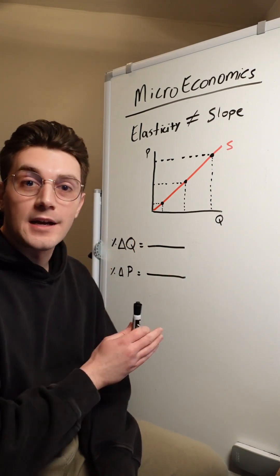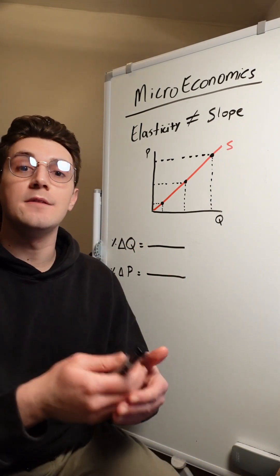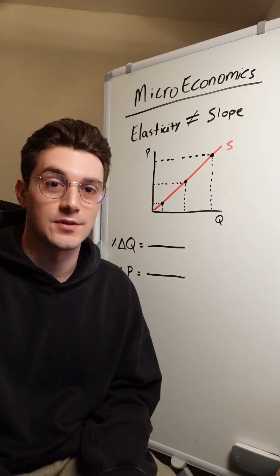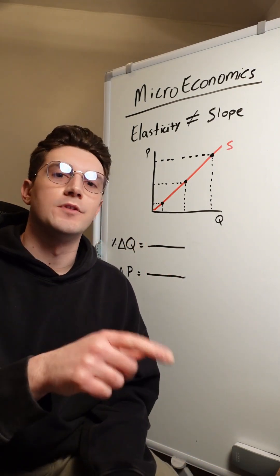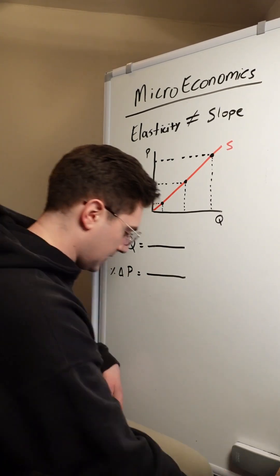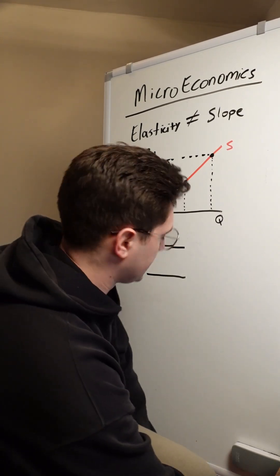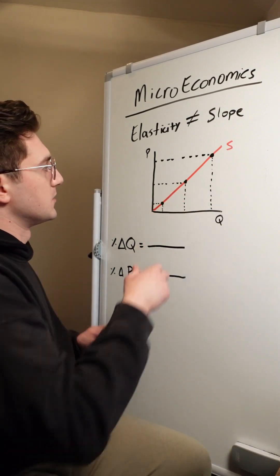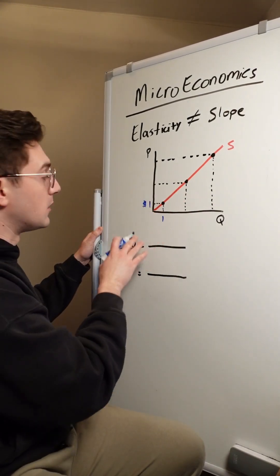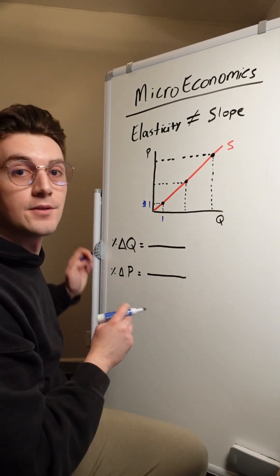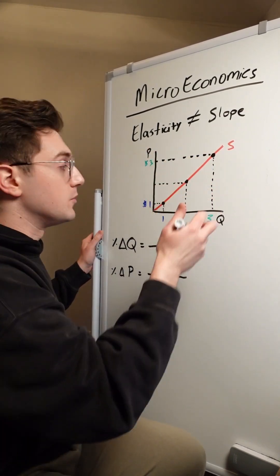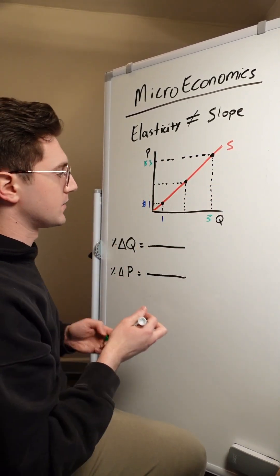We're going to start with the supply curve and see with the midpoint method how elasticity does equal slope, and then we'll go over to the demand curve and see how it doesn't. With the supply curve, let's pick two points to go between — this point here as P1 with these blue price and quantity values, and this point as P2 with these green quantity and price values.